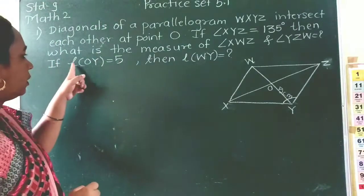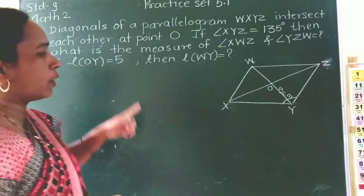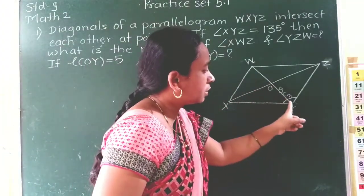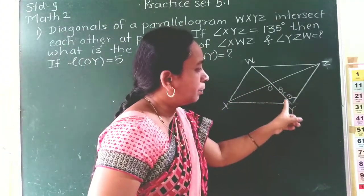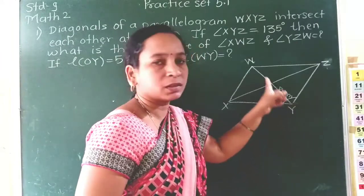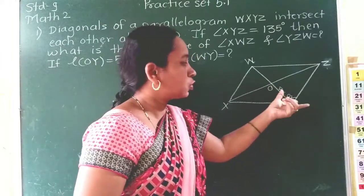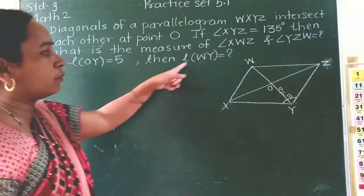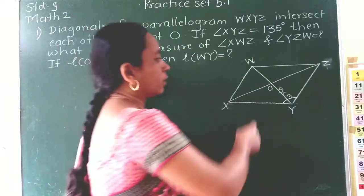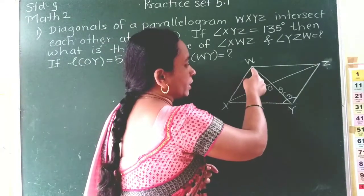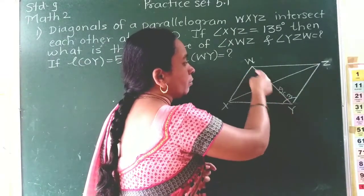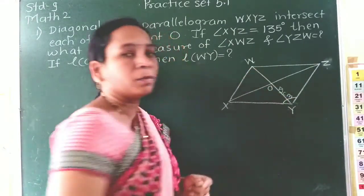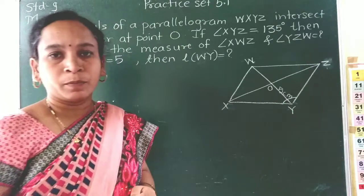Then, the length of OY — OY is a half part of diagonal WY. OY is given as 5 cm. We want to find out the measurement of diagonal WY.